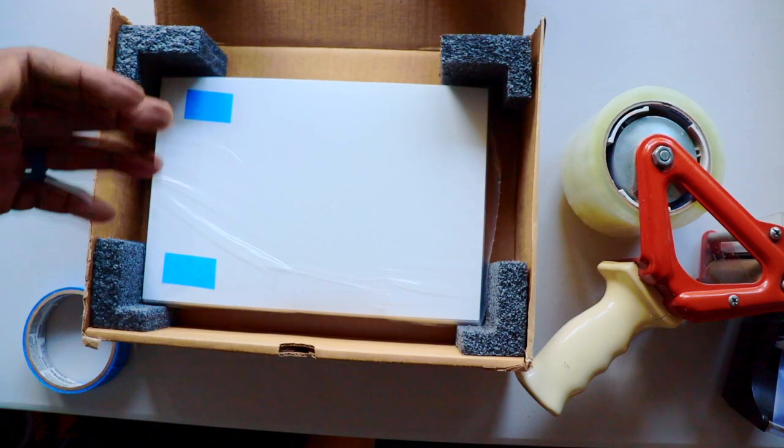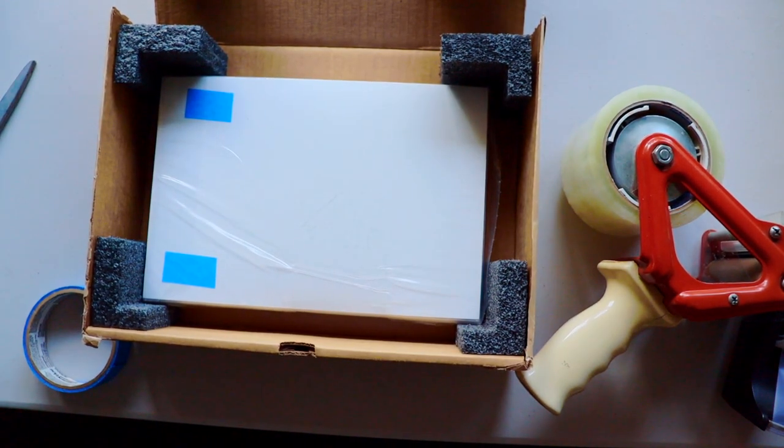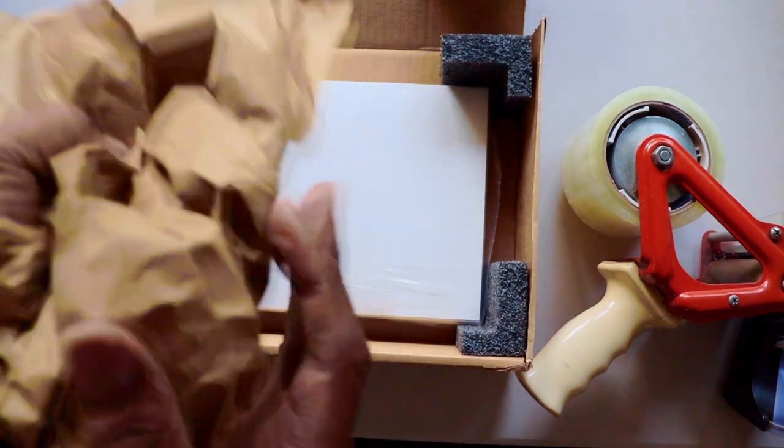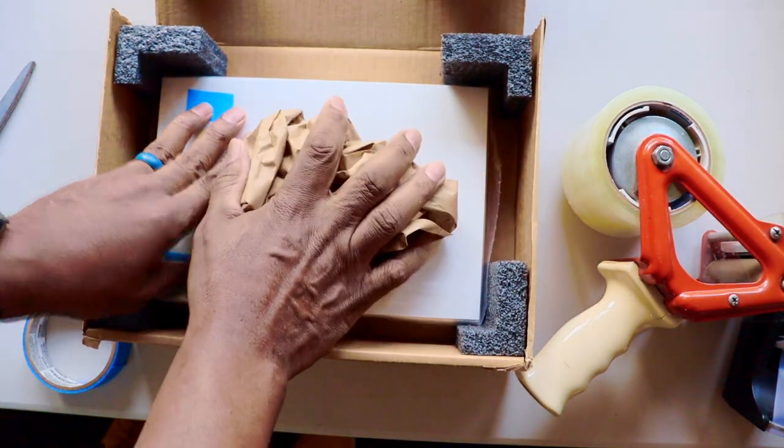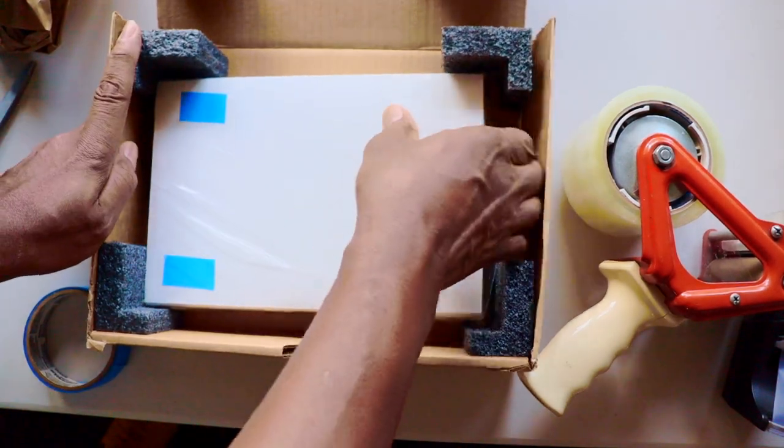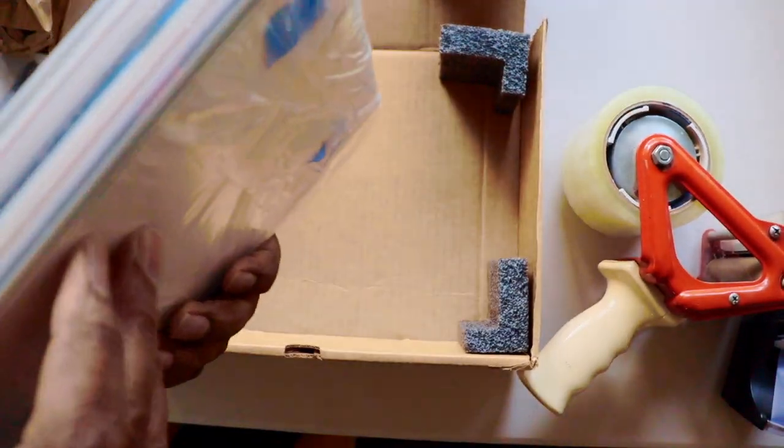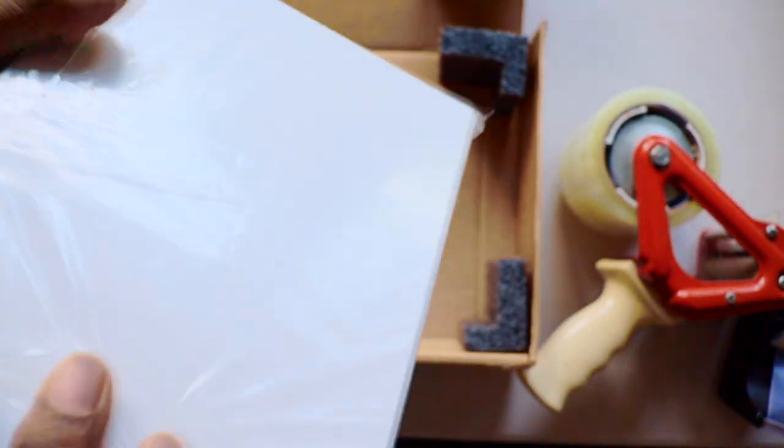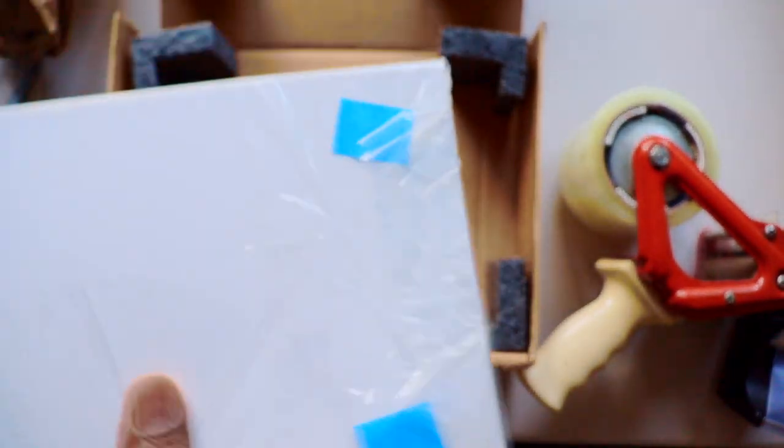They come with these little corner things which absorb all the movement and all the impact from the corners. I'm just going to take some paper and stuff it in here. Take a bunch of paper in here to take up the movement on this side.